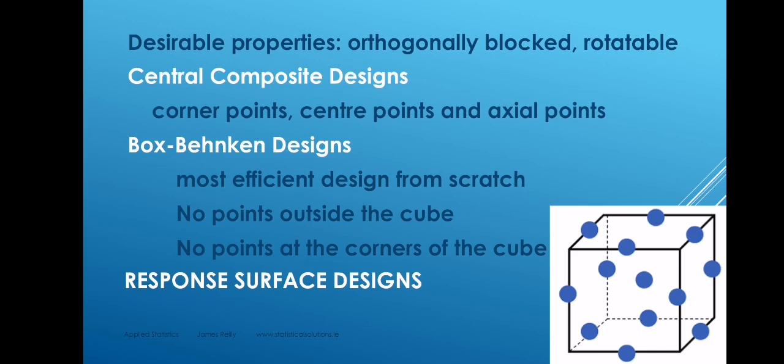However, the best design of all is the Box-Behnken design. It's economic. It requires only a small number of observations to deliver a good result. So if you're planning a response surface methodology from scratch, the most efficient design is a Box-Behnken design. There are no points outside the cube, so you have no worries about violating process specifications. And no points at the corners of the cube, so you won't have a situation where all inputs are set at extreme values simultaneously. But the best thing about a Box-Behnken design is that for a small number of observations, you can gain a lot of insights on the response surface.